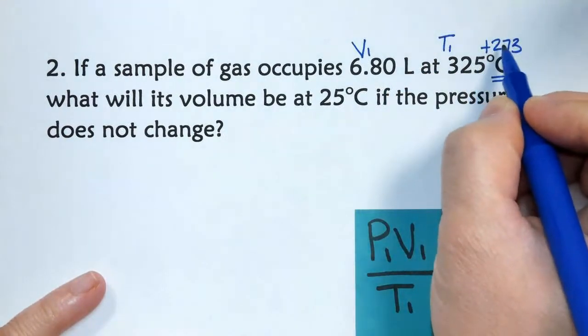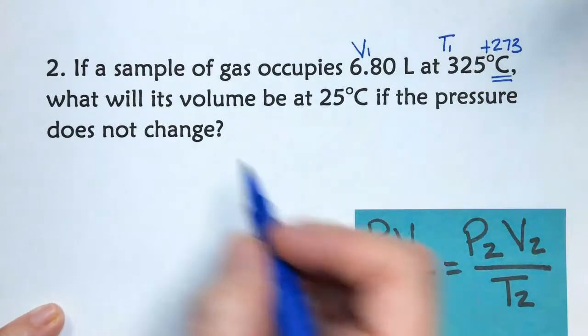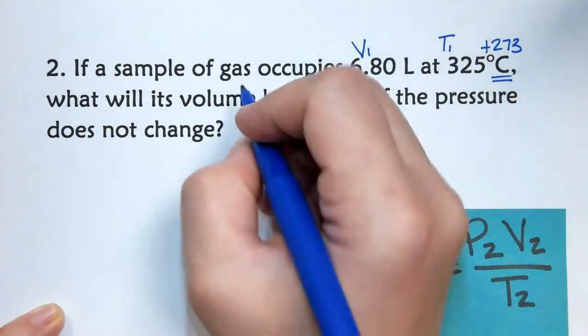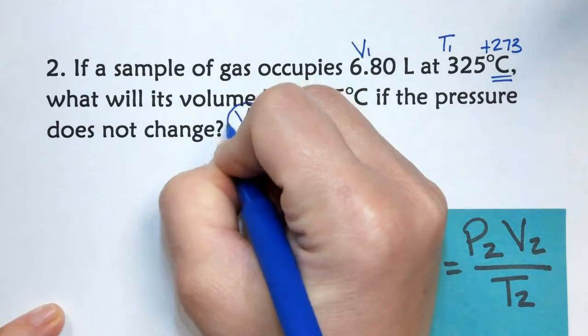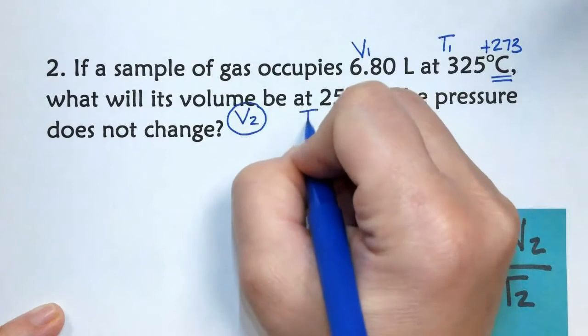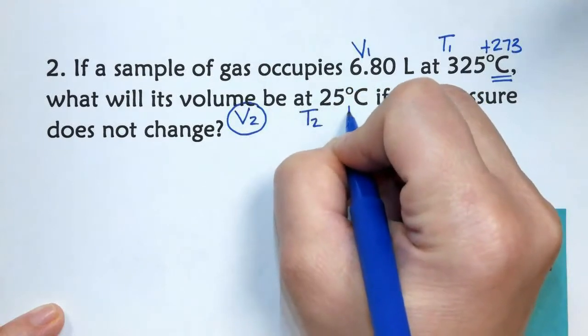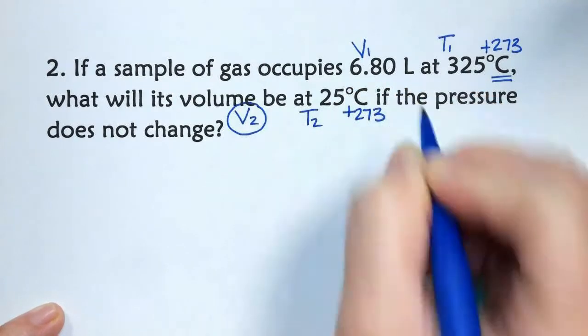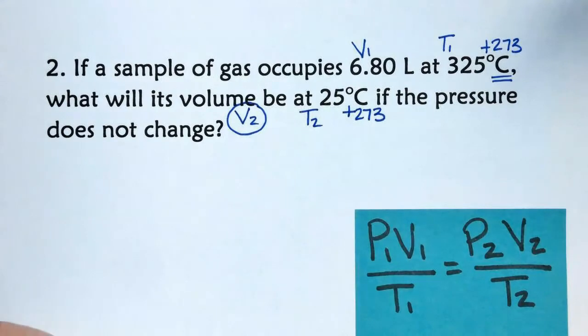What will its volume be, so what is my second volume, and then this is my second temperature, T2. You see how it's in Celsius, plus 273, automatically. So now, let's go set up our problem.